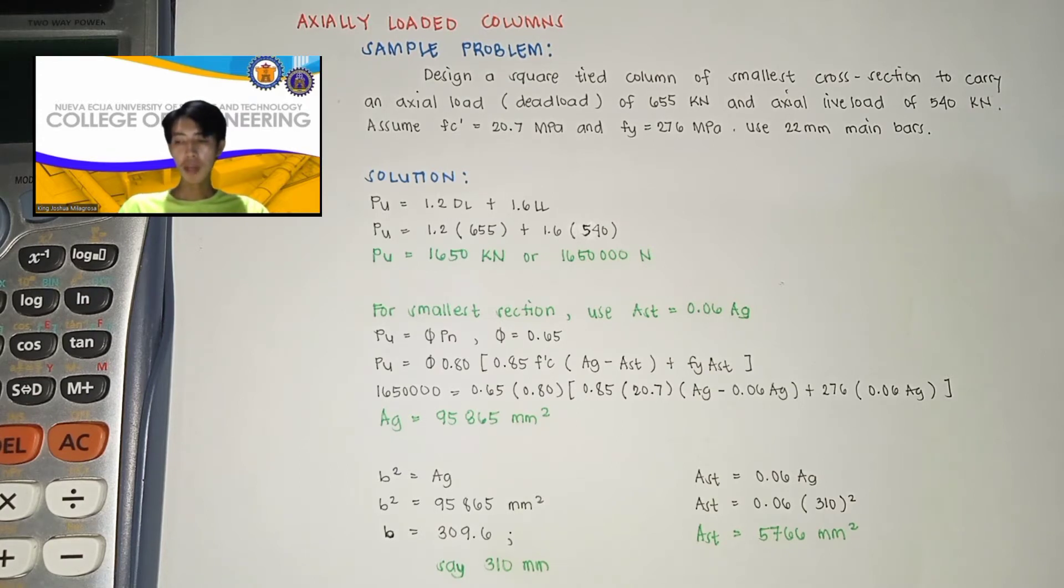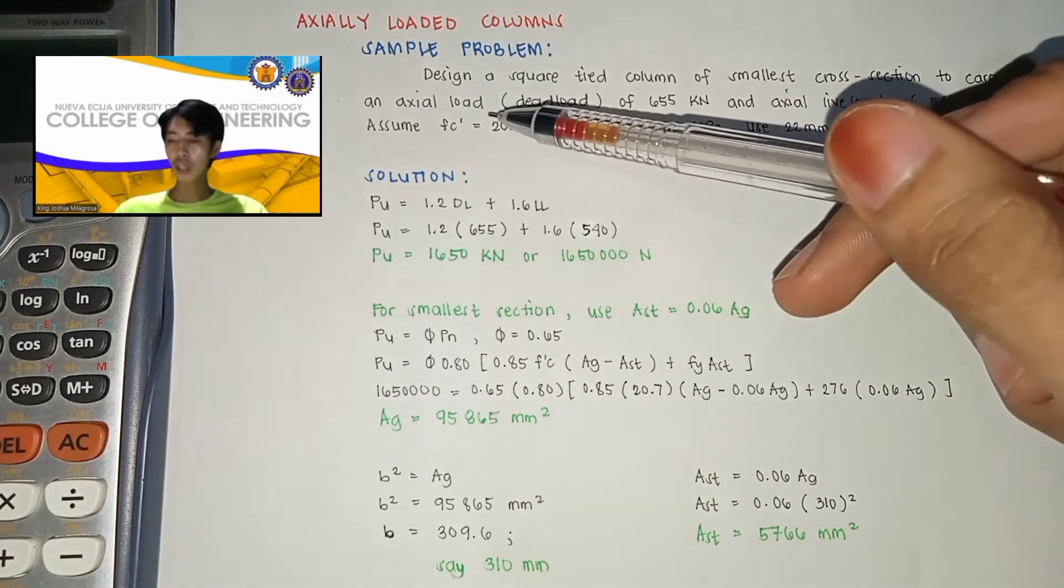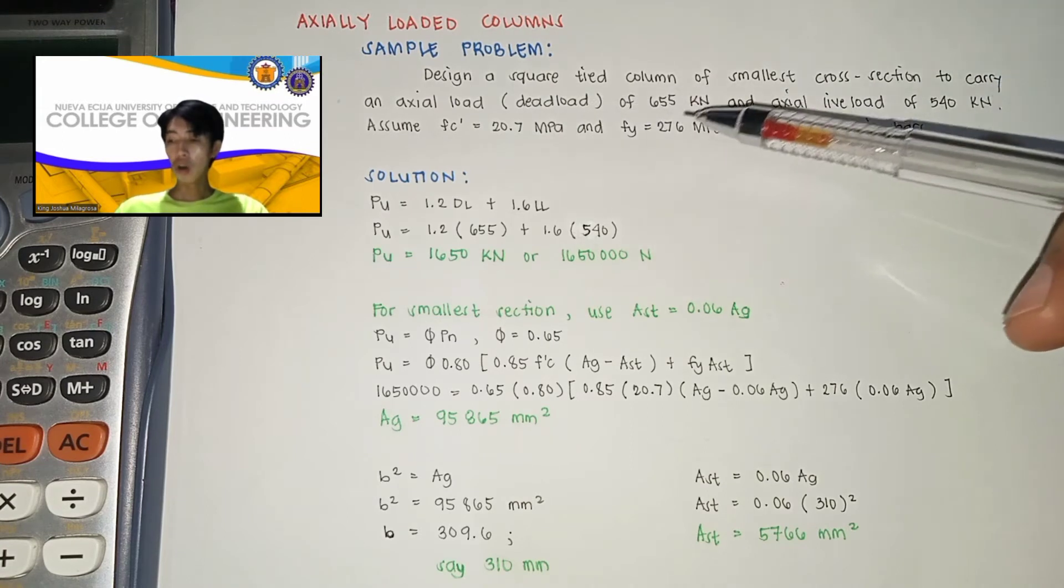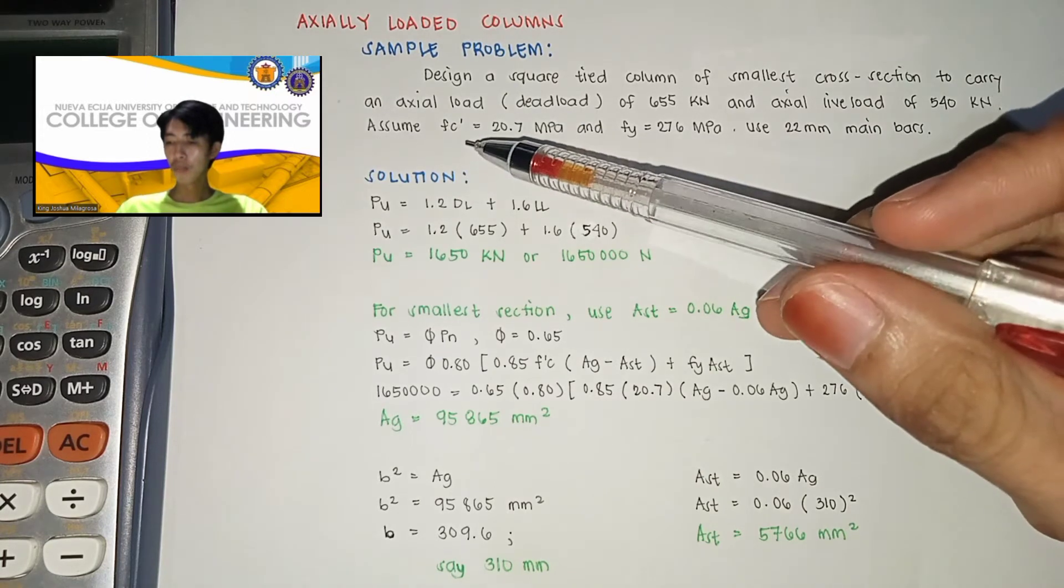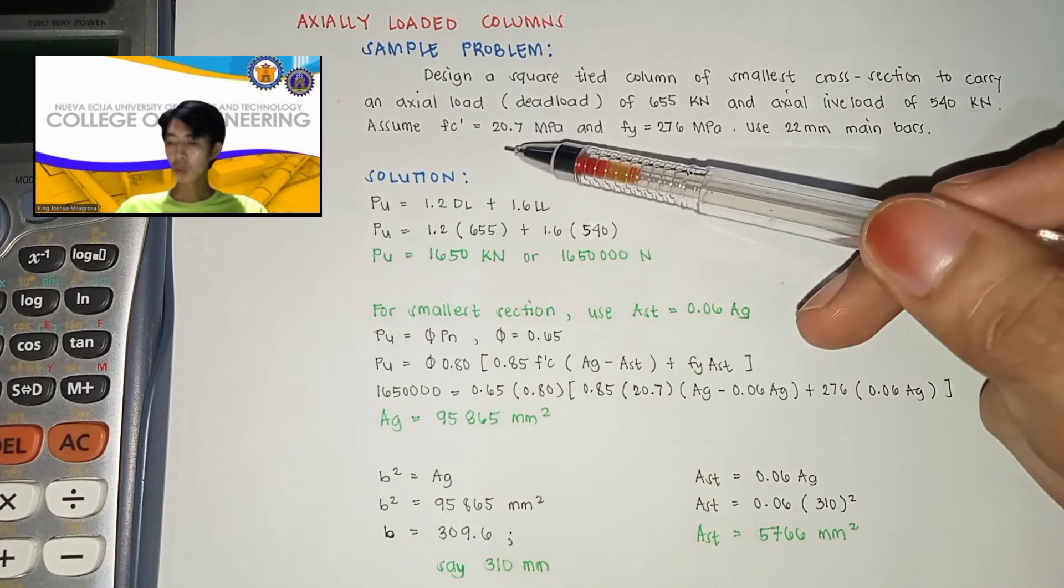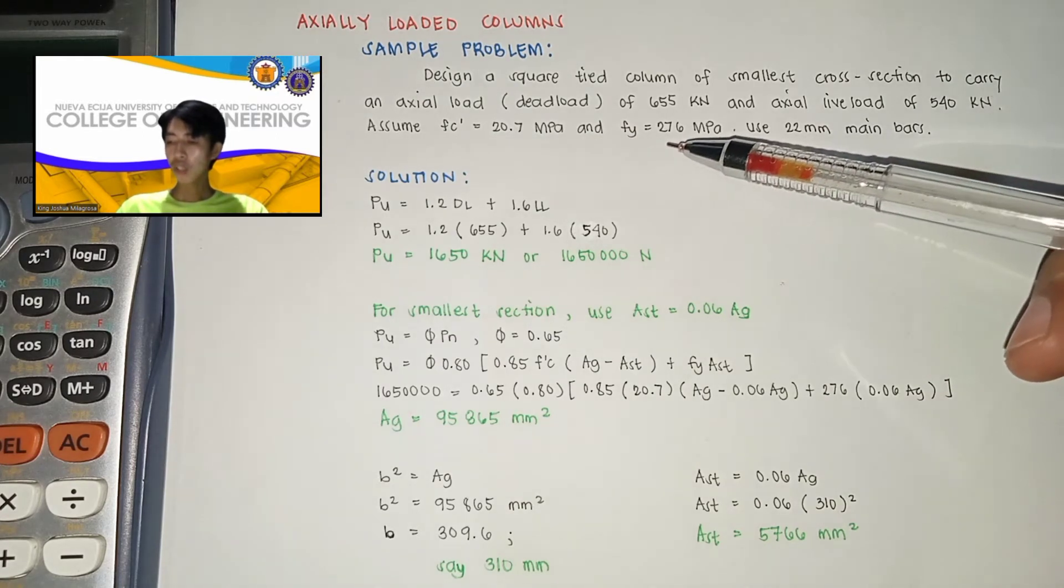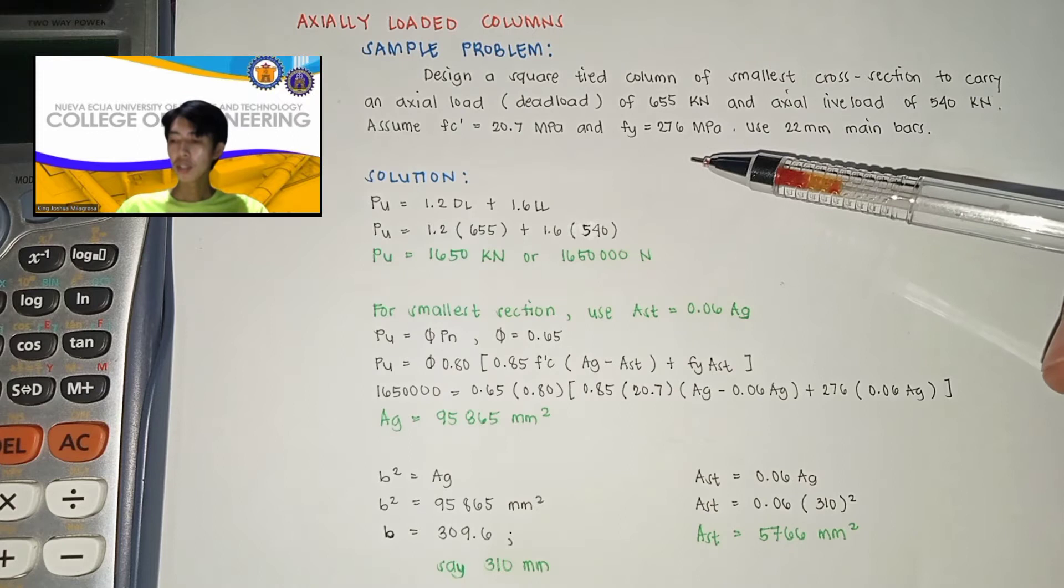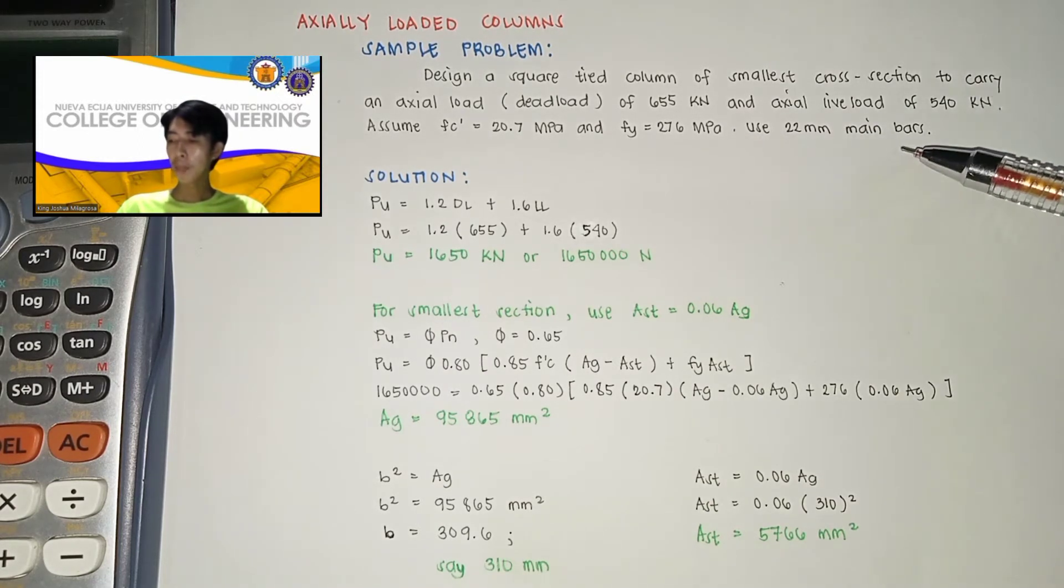So here is the problem. Design a square-tied column of smallest cross-section to carry an axial dead load of 655 kN and axial live load of 540 kN. So here, assume natin na yung FC' is equal to 20.7 MPa and yung FY is equal to 276 MPa. So dito, gagamit tayo ng 22mm main bars.